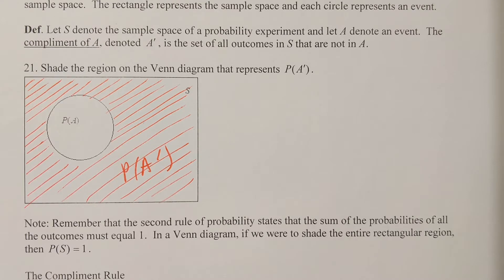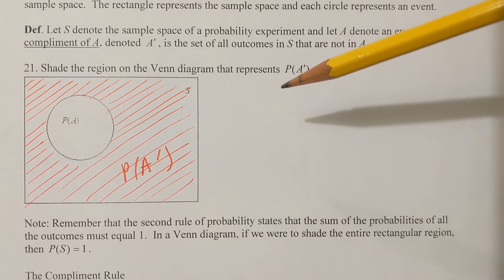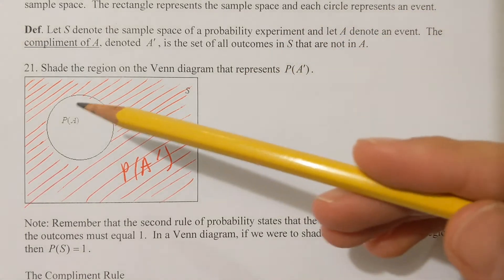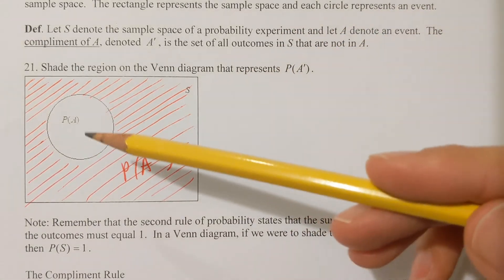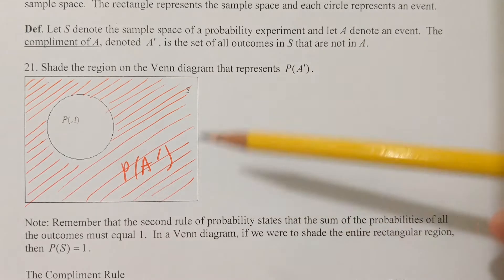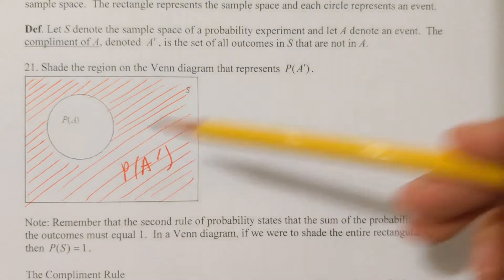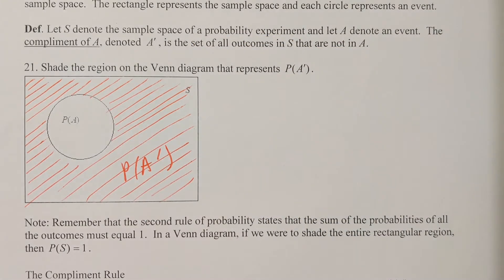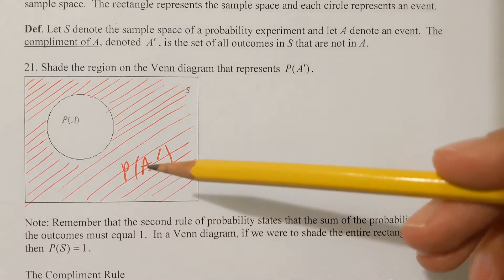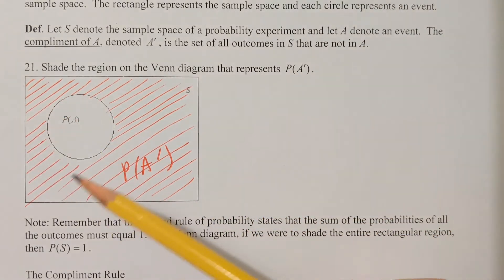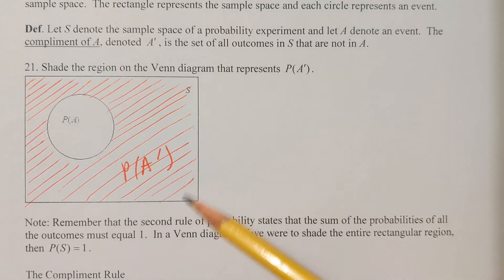Problem 21: shade the region on the Venn diagram that represents the probability of A complement. Here's A, and here's the sample space. Anything that is A complement would be outside of event A but still part of the sample space. So here would be the probability of A complement, and I've got that area shaded there.